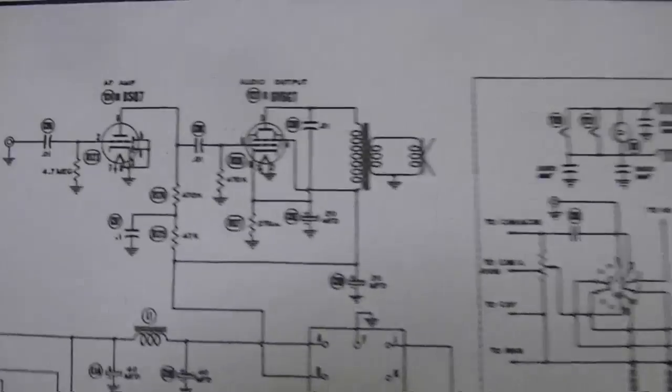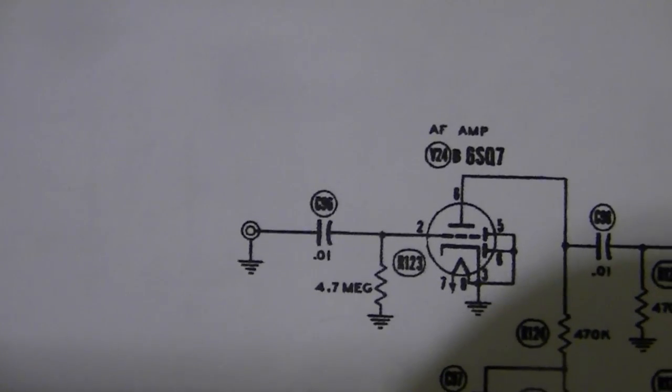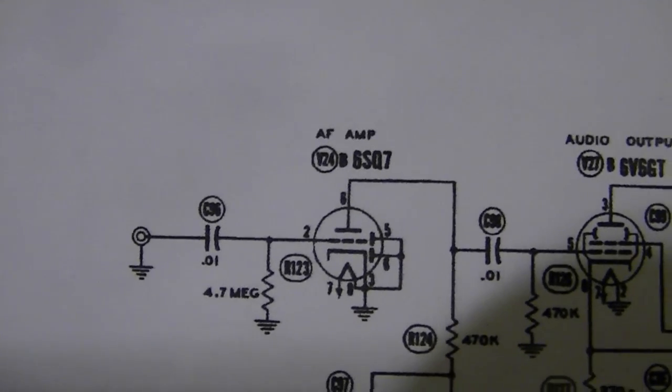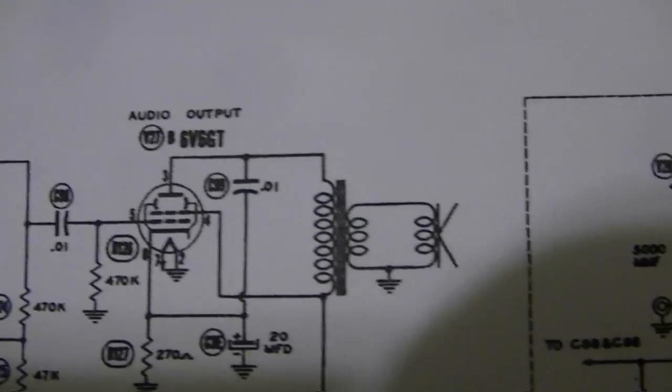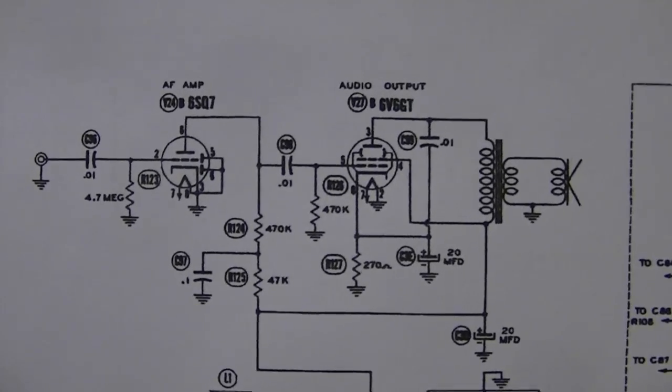Here's the schematic, kind of tiny but I'm on my way through so there's the RCA input through a 0.01 microfarad cap to the 6SQ7 then to the 6V6 to the speaker. Now I've already recapped this and I think I replaced all the resistors.